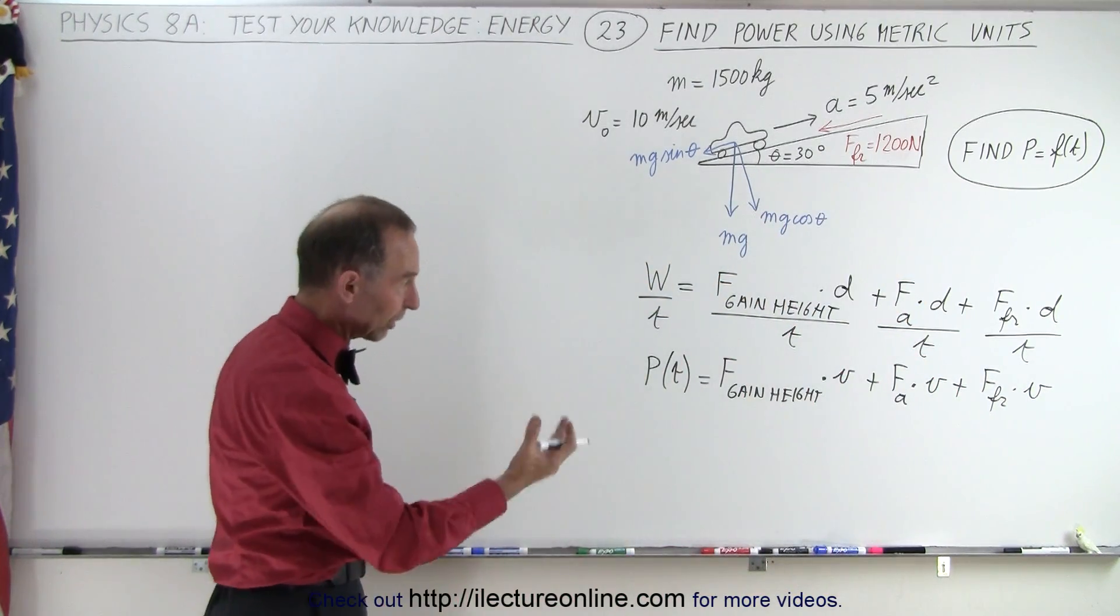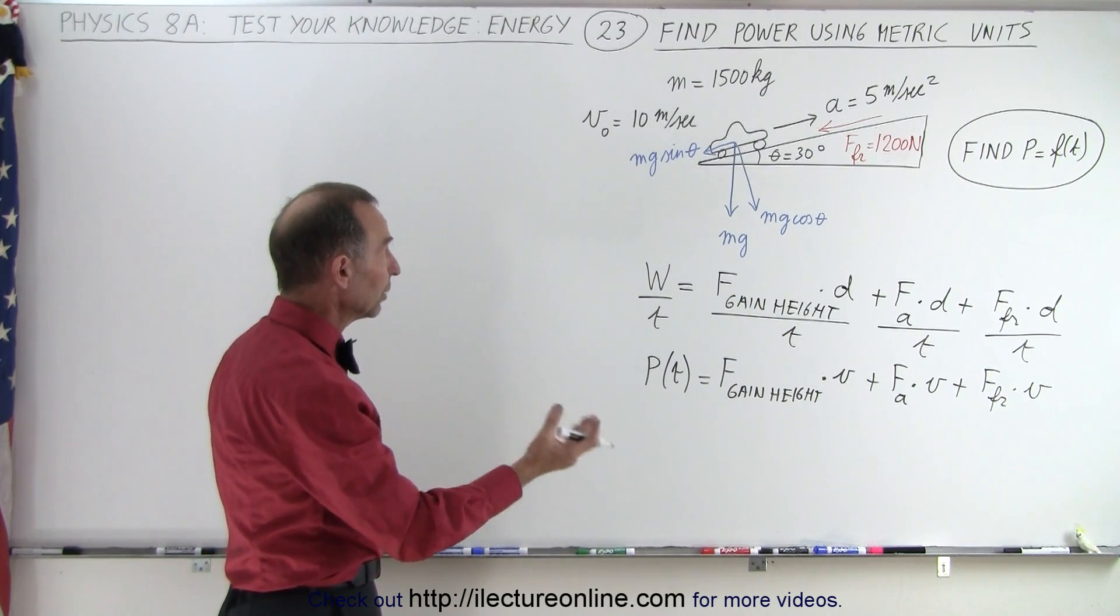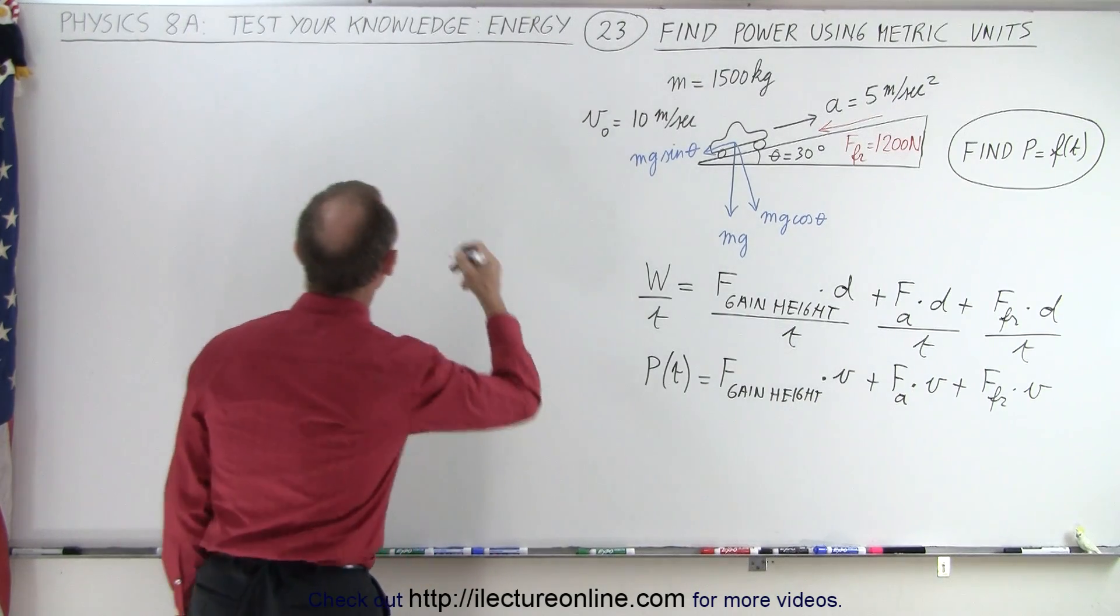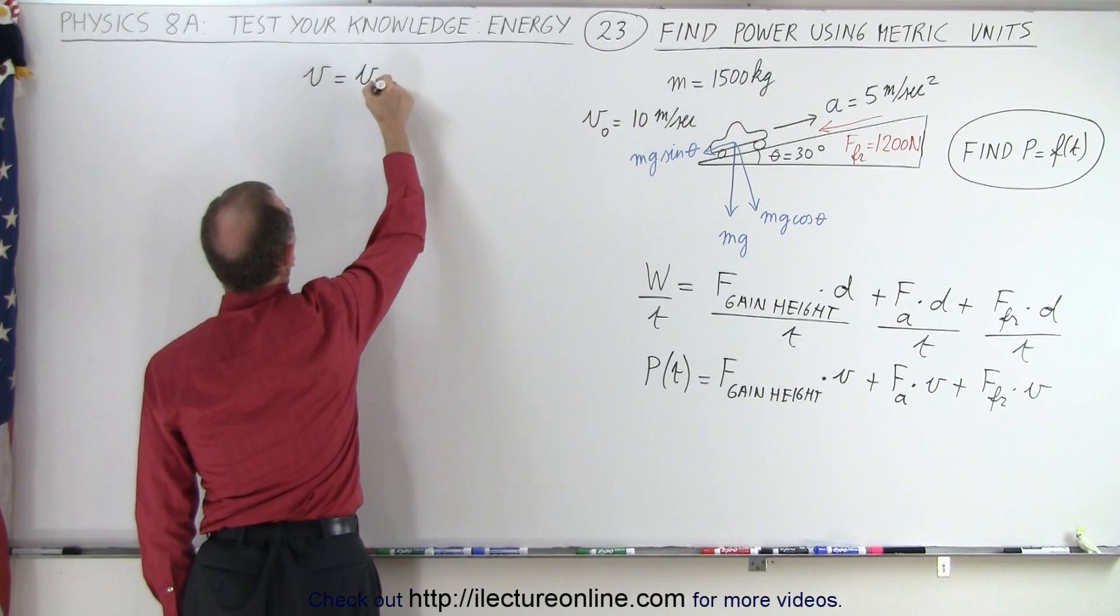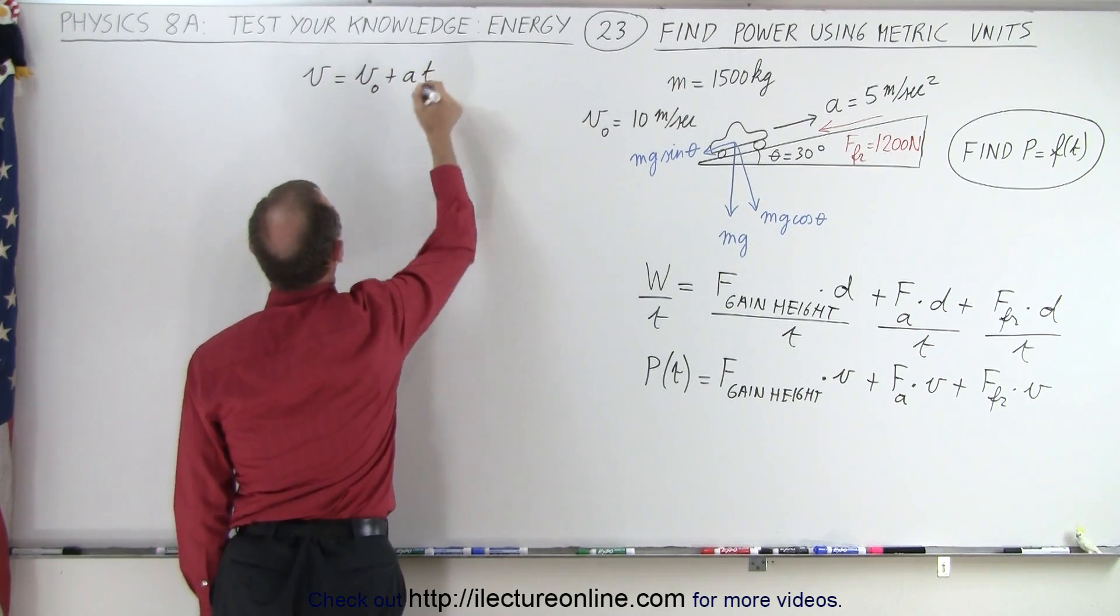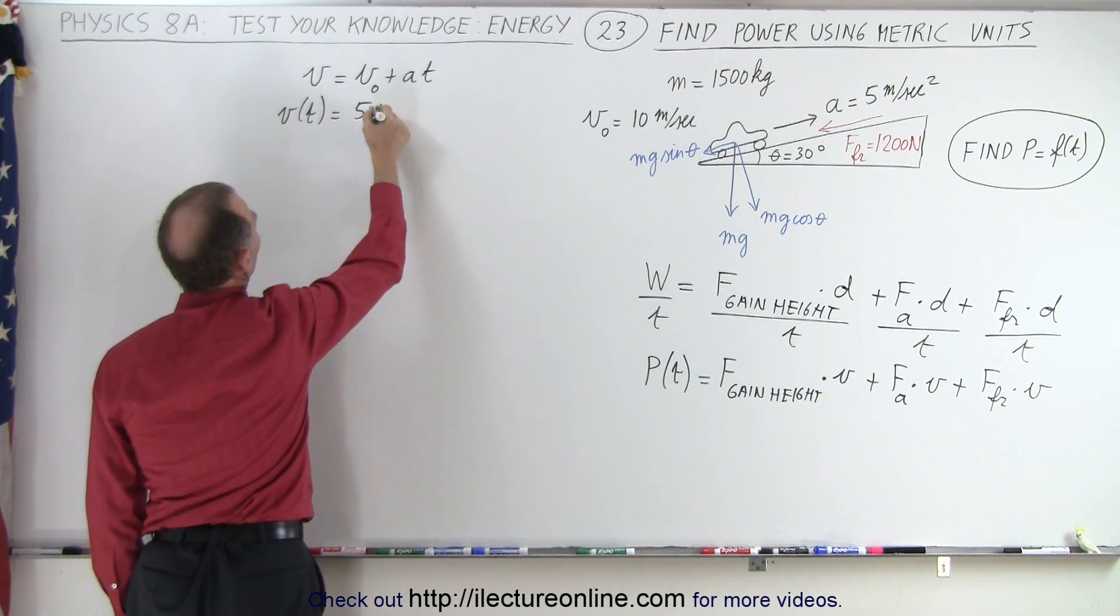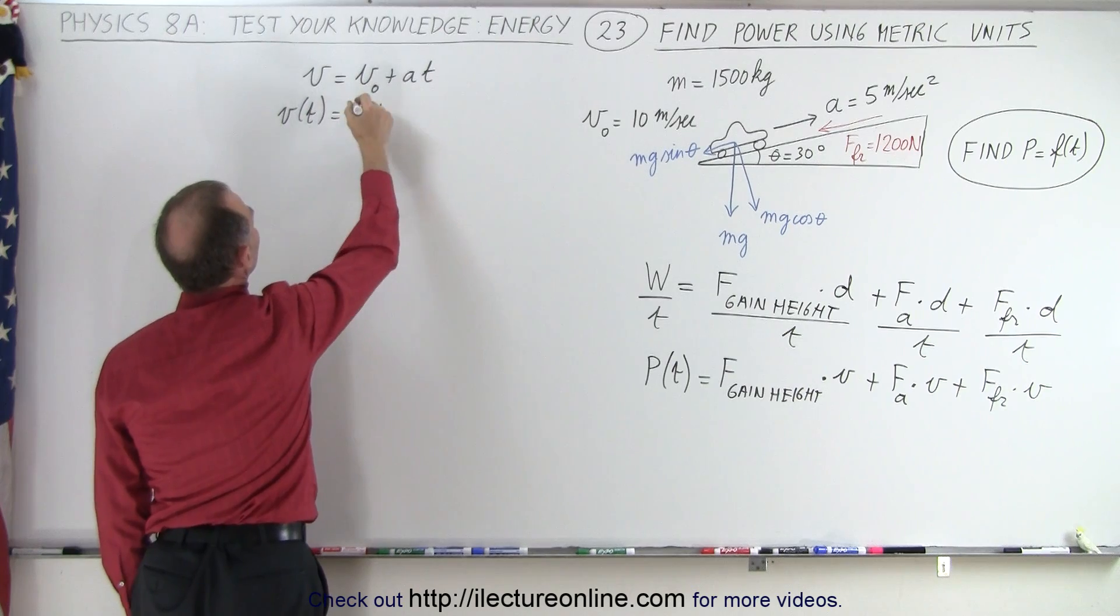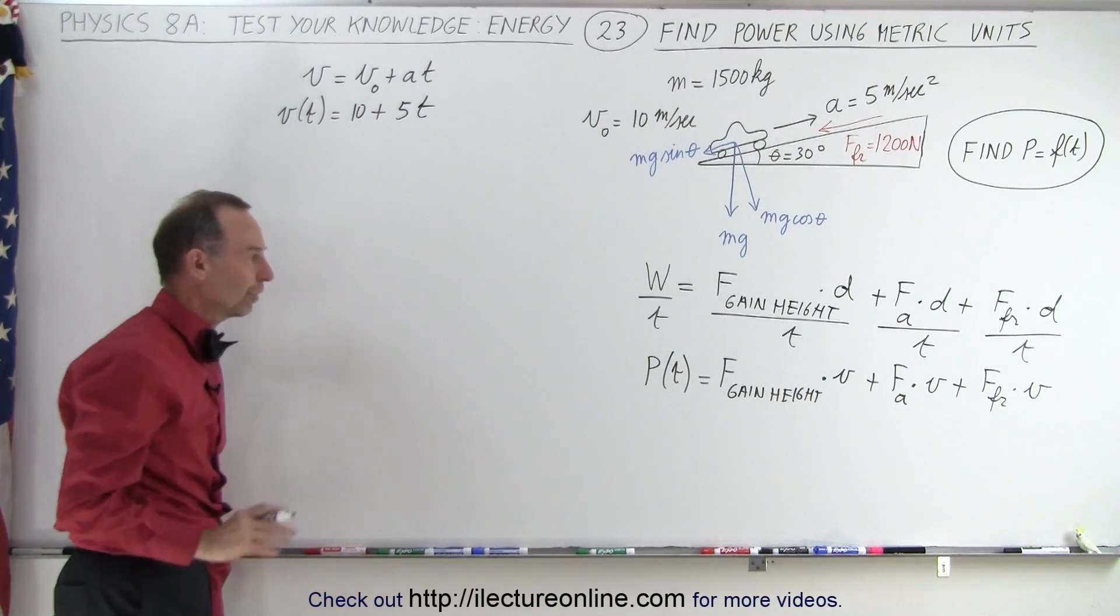And of course, we're going to factor out velocity, but we realize that to find velocity, we need to write it in terms of initial velocity and acceleration. So velocity equals initial velocity plus acceleration times time. That means velocity as a function of time equals 10 meters per second plus 5 times t.